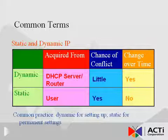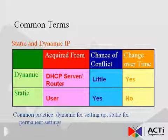It is common practice that Dynamic IPs are used for initial setup to establish communication with all cameras at once, then they are individually changed to Static IPs to finalize the network setup.